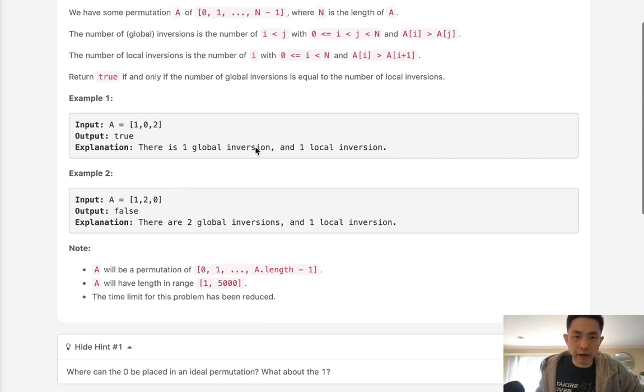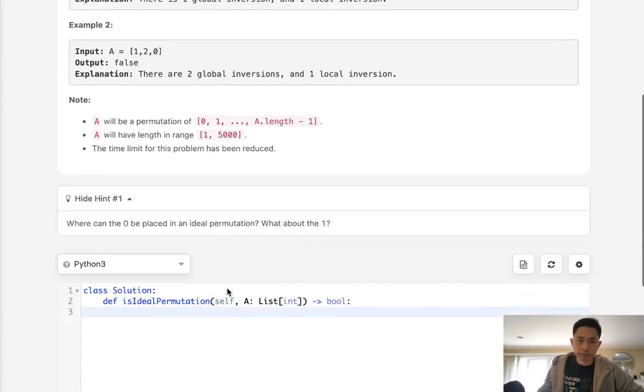Okay so the first approach I thought was finding the number of local inversions is pretty trivial. We can do that in O(n) time just looking at the previous number to see if it's greater or not than this index number. If it is we can just add one there. But what about global inversions? That's a lot trickier right.